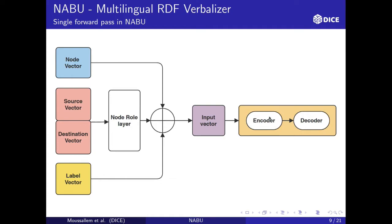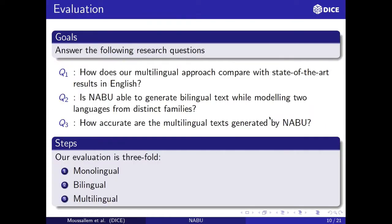After training our model, we need to evaluate. We have the following research questions: How does our multilingual approach NABU compare with the state of the art in English? Is NABU able to generate bilingual text while modeling two distinct language families? We focus on English, German, and Russian — English and German belong to the same family while Russian belongs to another family.